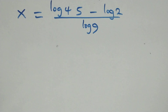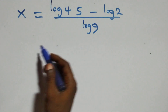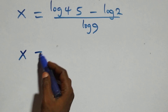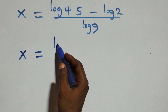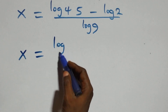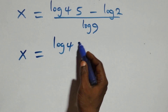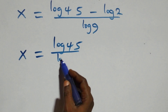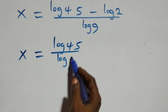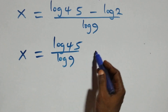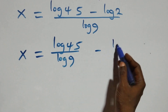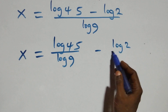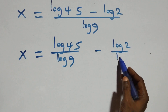Next step here, we separate this into two fractions. And we have x equals to log 45 over log 9 minus log 2 over log 9.